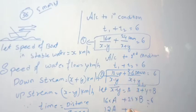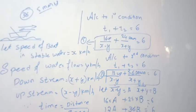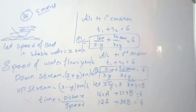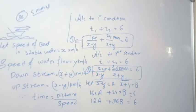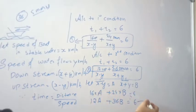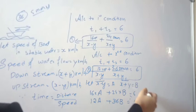Substituting into equation 2 gives equation 4: 12a plus 36b equals 6. Now we solve equations 3 and 4 by elimination — we will multiply to make the first terms equal.